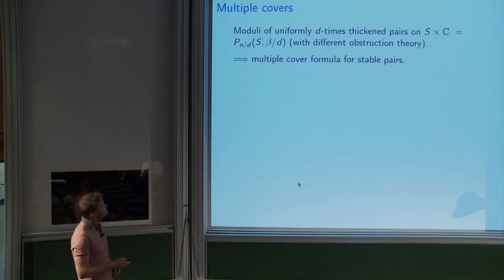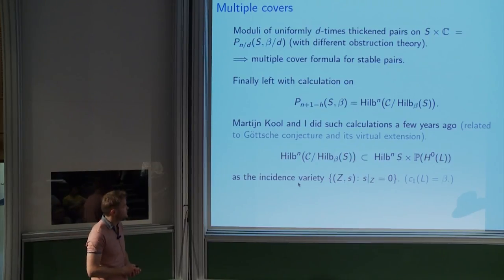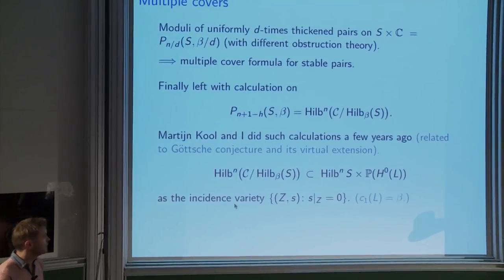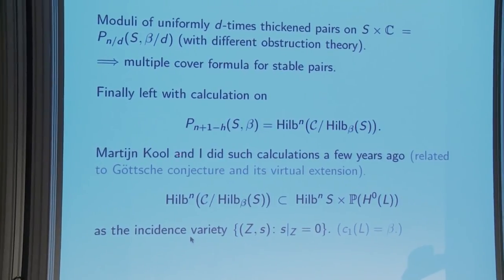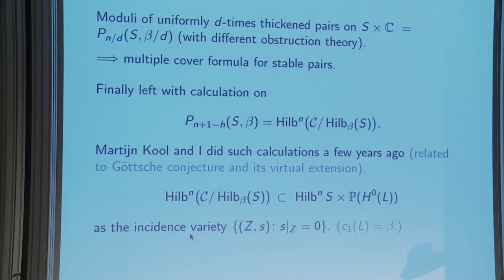For non-uniformly thickened pairs the vector field is globally new, giving a trivial obstruction and the virtual cycle vanishes — so only uniformly thickened pairs contribute. This is a multiple cover formula in stable pairs, and the moduli space of uniformly thickened pairs is just the moduli space of stable pairs on the original K3 surface (the thickening contributes only a single integer). This vanishing theorem reduces the computation to the thin K3 surface with no thickenings at all, proving the BPS formula for stable pairs. Finally, the remaining computation on the surface uses the fact that the moduli space is a Hilbert scheme of points on curves, and these calculations were done previously.